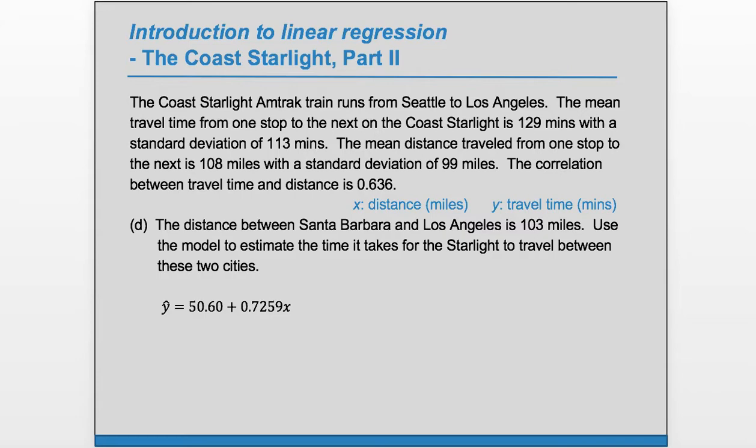So we'll just take our regression equation that we've already found, and they're giving us a distance, which is x. So we'll just plug that x value of 103 in for x, and we get our y hat value, 125.4 minutes. That's our predicted time.